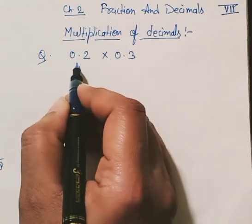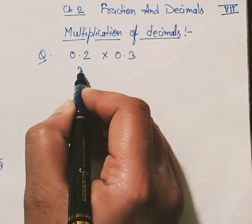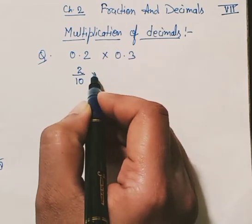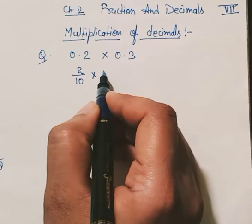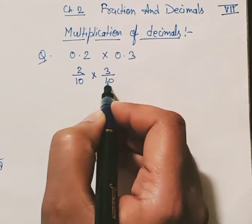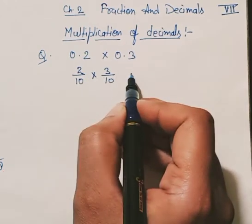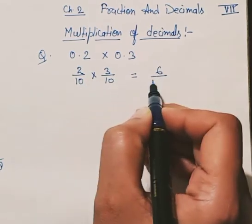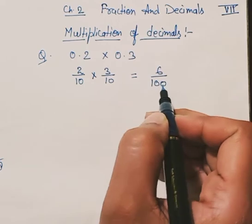0.2 can be written as 2/10 multiplied by 0.3, which can be written as 3/10. On multiplying these two, we have 3 times 2, which gives us 6, divided by 10 times 10, which gives us 100.